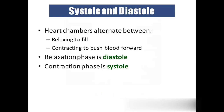Systole and diastole. What is the normal blood pressure of our body? The answer is 120 by 80 mmHg.